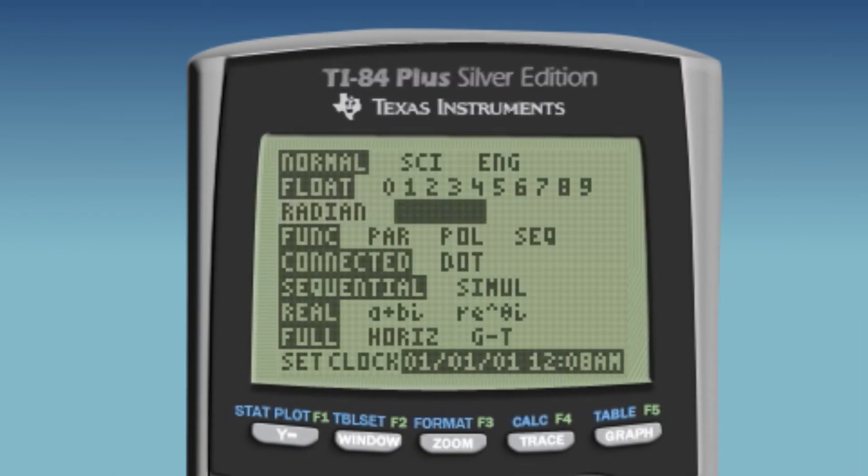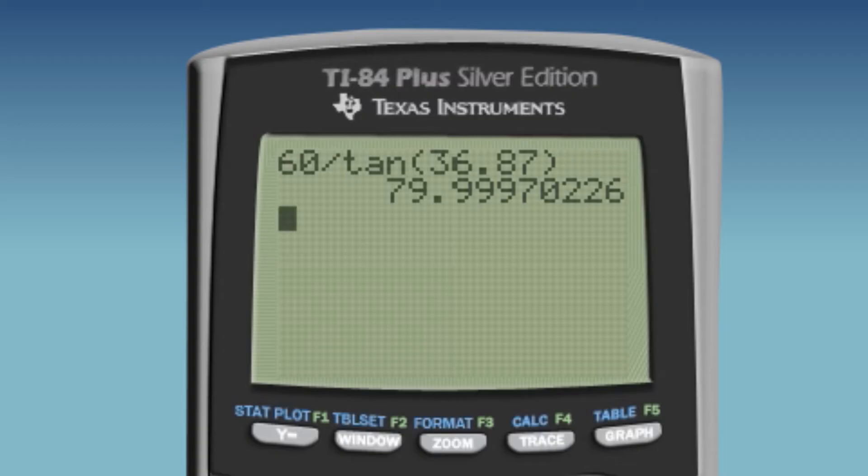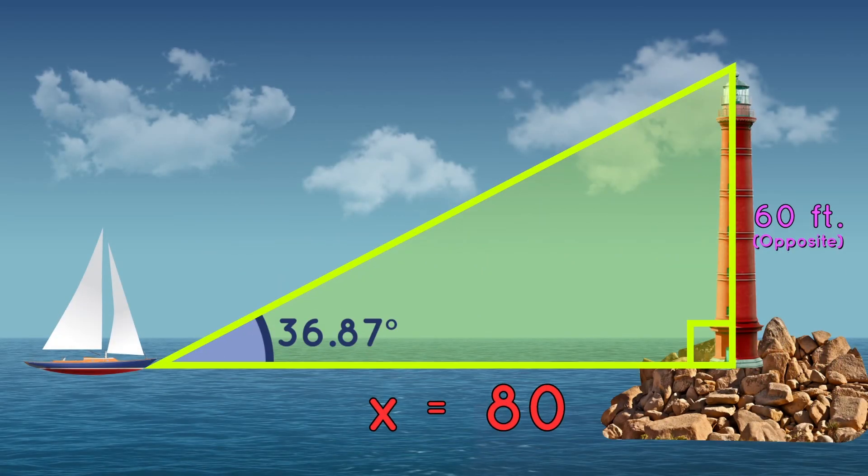Now it's time to plug it in our calculator. You have a calculator out here? Always prepared! Make sure your calculator is set to degrees, not radians. Then we enter 60 divided by tangent of 36.87, close parentheses, and there it is. Our length is 79.999, which we'll round up to 80. So we're 80 feet offshore.